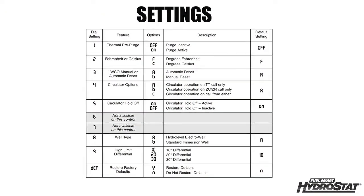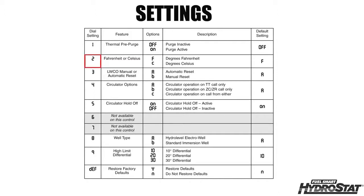All of the program features in the program mode can be activated the same way. Here is a list of the other program options that you can select. Option two allows you to set the control for Celsius or Fahrenheit. The factory default is set to Fahrenheit.